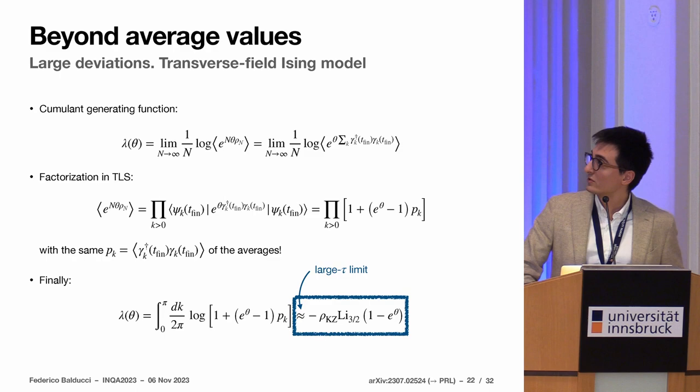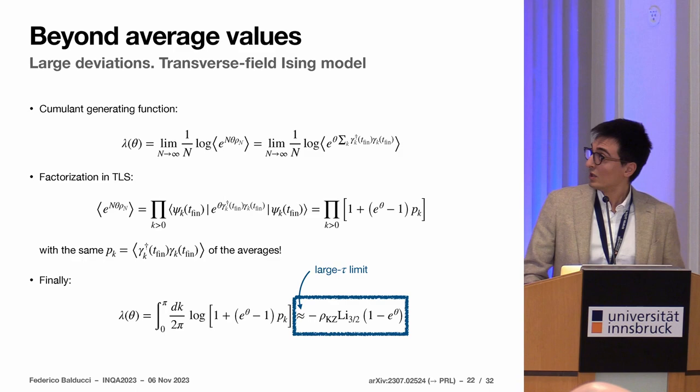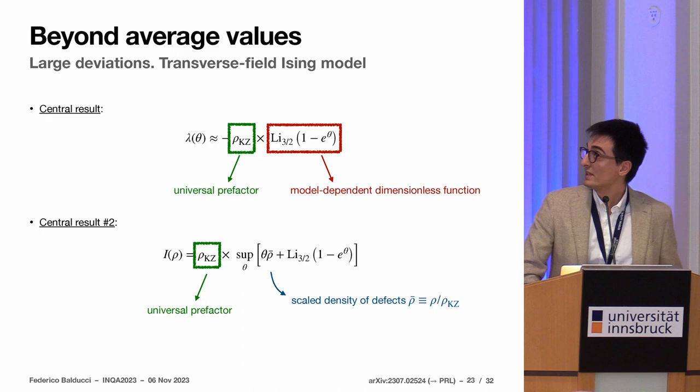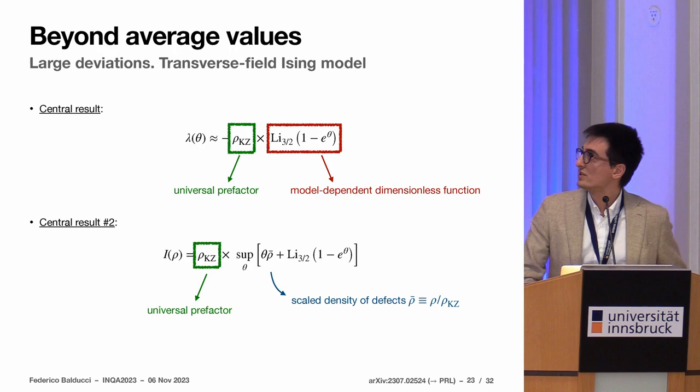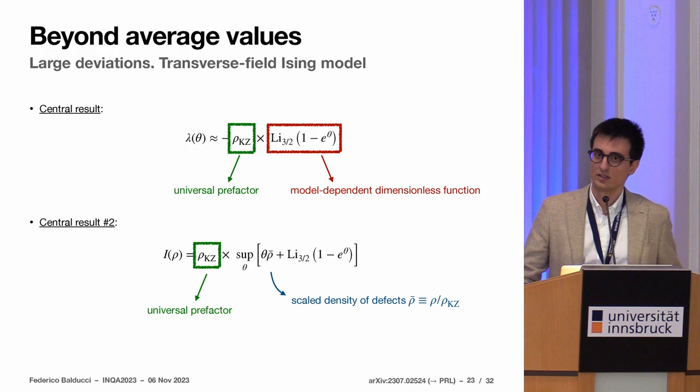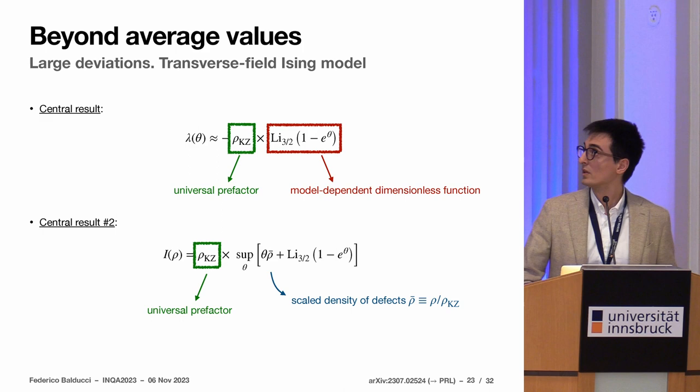Let me take also a large tau limit in order to simplify the formula here. So you pass the logarithm, you find this integral here, you apply an expansion in large tau, and you find this formula. This is one of the important results of this work. Why is this form of the cumulant generating function interesting? Because it splits into quite different parts, because there is an overall prefactor which is exactly the Kibble-Zurek density, so tau to the minus one half, and a function which instead doesn't contain any information about the protocol.